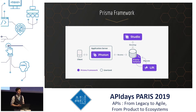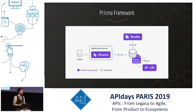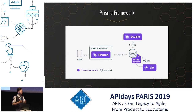Then there is Lift. Lift can access your Prisma schema, connects to the database, and will generate a safe and resilient database migration every time your schema changes. So you don't have to manually access the database. You just need to change the schema — change how you structure your data — and the Prisma framework with Lift will change the structure of your databases for you.